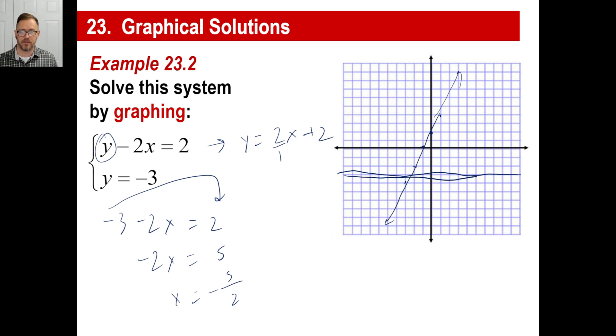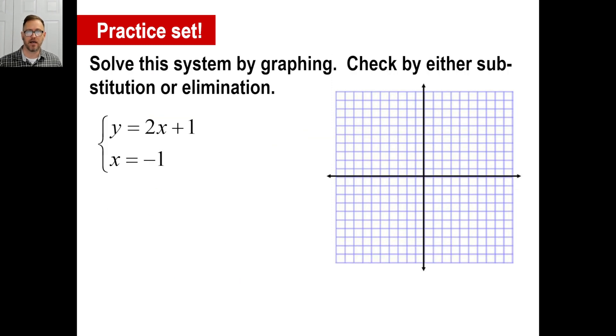So that's basically going to be your solution by graphing. And you might have to, if it doesn't intersect at a perfect point on your graph, you're going to have to go and actually do substitution or elimination. But a lot of these, they contrive to where it looks good and it works out exactly on a point. Check your answers. Make sure. Pause it here and do the practice problem. Come back.